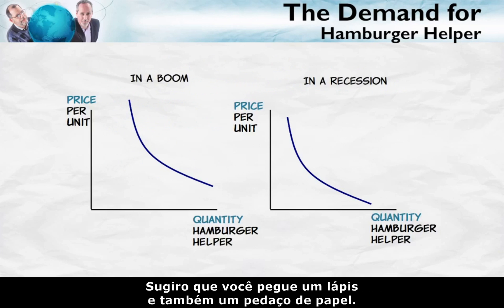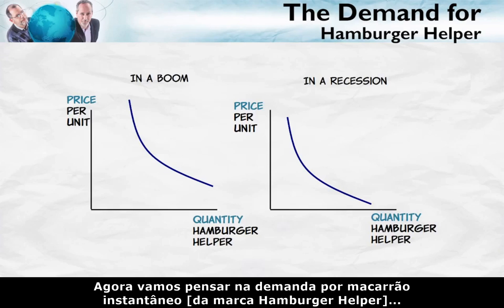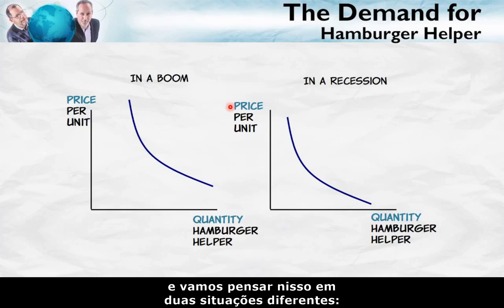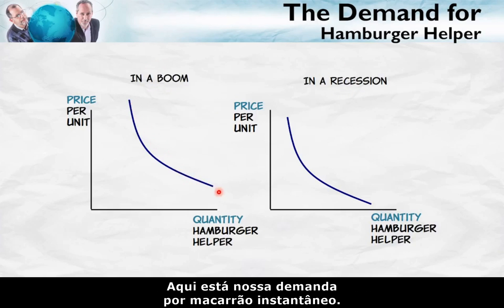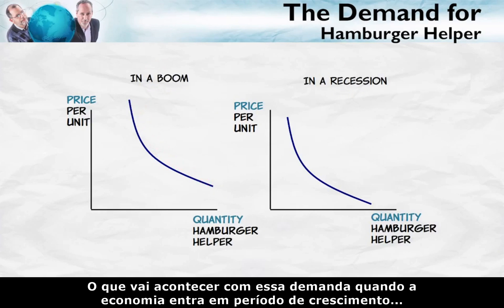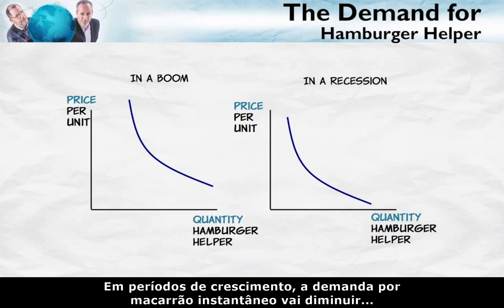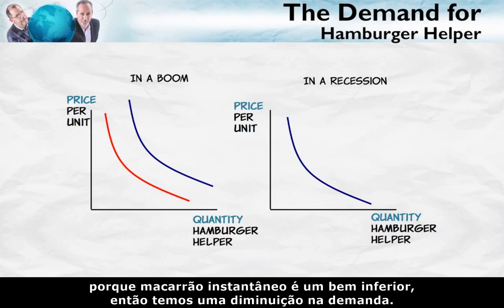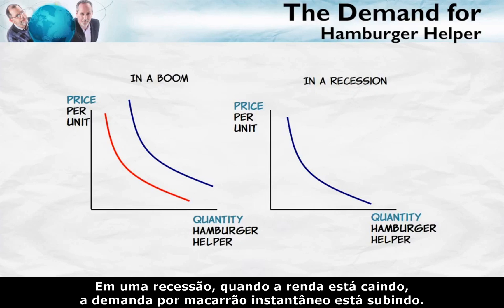Let's test your knowledge. Get a pencil and a piece of paper and put down two demand curves. We're going to think about the demand for hamburger helper in two different situations: during a boom and during a recession. What is going to happen to this demand when the economy goes into a boom, when people's incomes go up? In a boom, the demand for hamburger helper is going to decrease because hamburger helper is an inferior good, so we get a decrease in demand. In a recession, when incomes are going down, the demand for hamburger helper is going up.